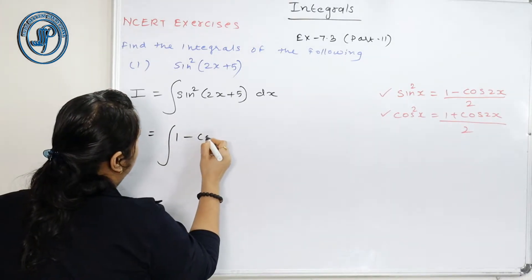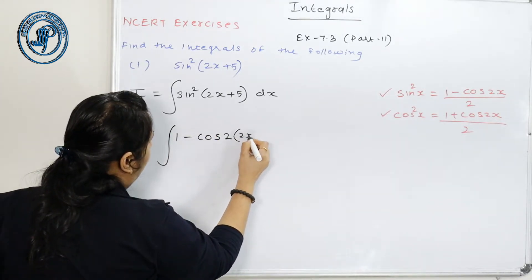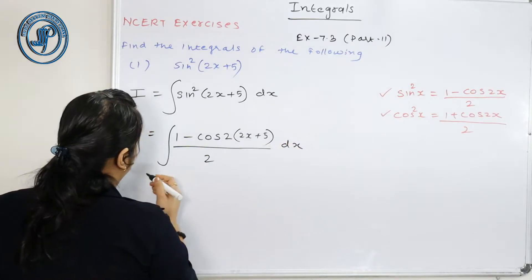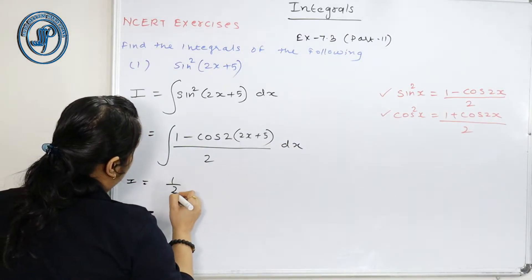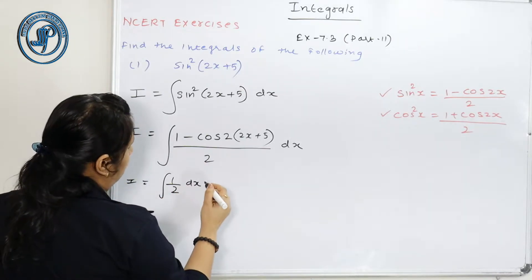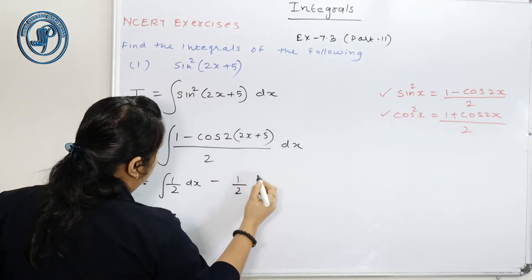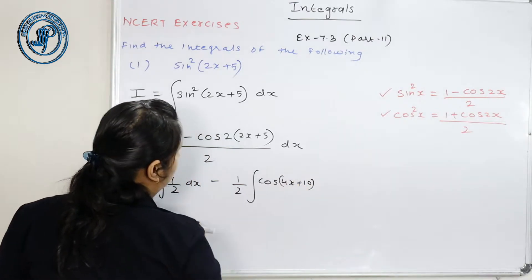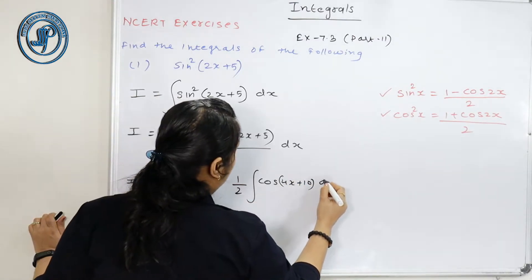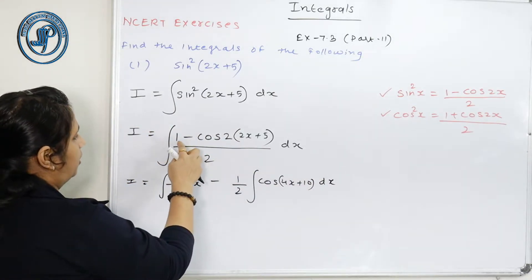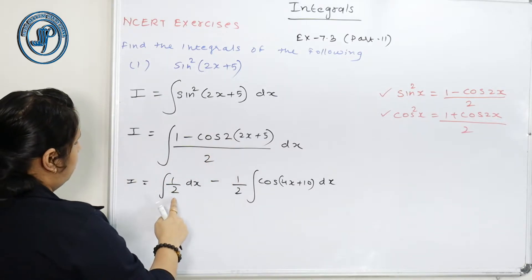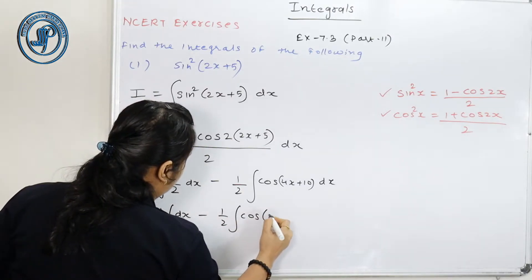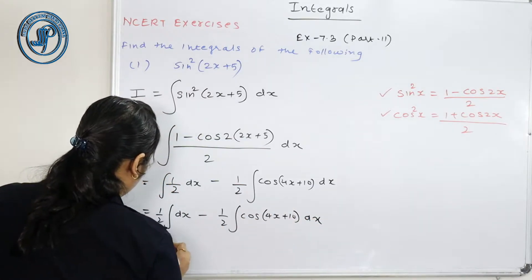So for sin²(2x+5), the formula is (1 − cos 2x) / 2, where 2x is 2θ so theta is x. So we write: (1 − cos(2·(2x+5))) / 2 dx. Taking the integrals separately, we get 1/2 ∫dx and (1/2) ∫cos(4x + 10) dx.